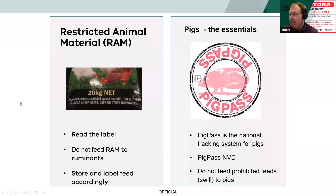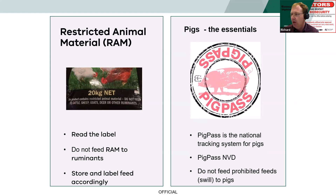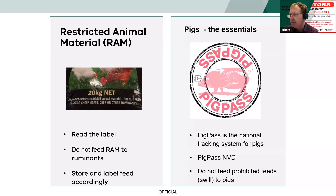This is a picture of a bag of chicken food. What it says is: do not feed to cattle, sheep, goats, deer, or other ruminants. So if you've got chickens on the property, make sure their food is stored separately and that livestock cannot access it.